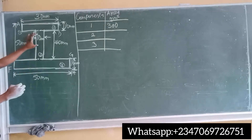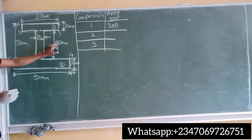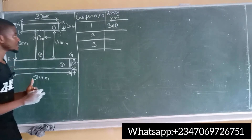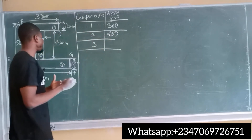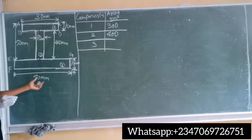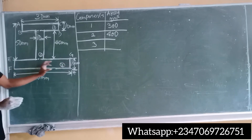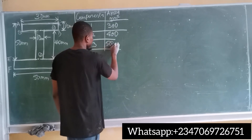The area of the second component: width is 10 mm and depth is 40 mm, so 10 times 40 gives 400 mm². For the third segment, the depth is 10 mm and the width is 50 mm, so 50 times 10 gives an area of 500 mm².